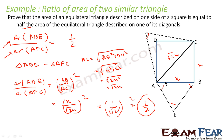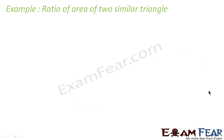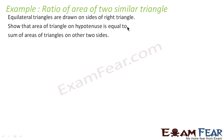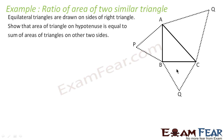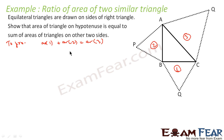We will take one more example. Equilateral triangles are drawn on the sides of a right triangle. We have to show that the area of the equilateral triangle on the hypotenuse is equal to the sum of the areas of the equilateral triangles on the other two sides. On each side of this right triangle, an equilateral triangle is drawn. Let's call them triangle 1, triangle 2, and triangle 3 (on the hypotenuse). We have to prove that area of triangle 1 plus area of triangle 2 equals area of triangle 3.